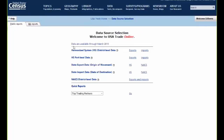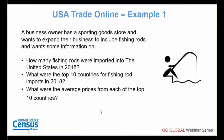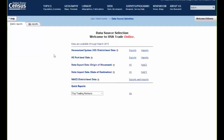For our first example: say you are a business owner with a sporting goods store wanting to expand into fishing rods. You want to answer: how many fishing rods were imported into the United States in 2018, what were the top 10 countries for fishing rod imports in 2018, and what were the average prices for each of those top 10 countries? We'll use the Harmonized System import database, as it offers the most detailed product-level data.